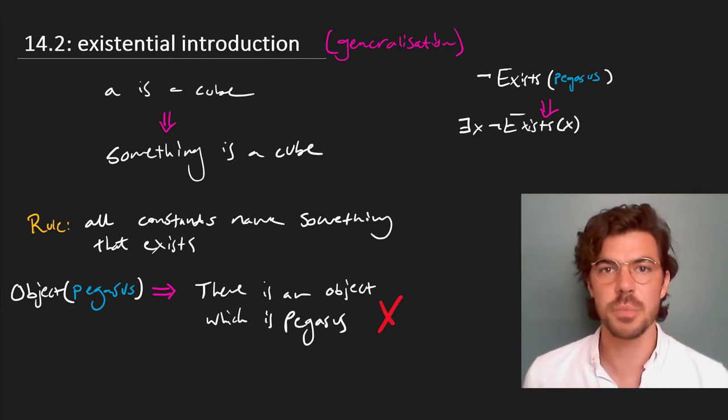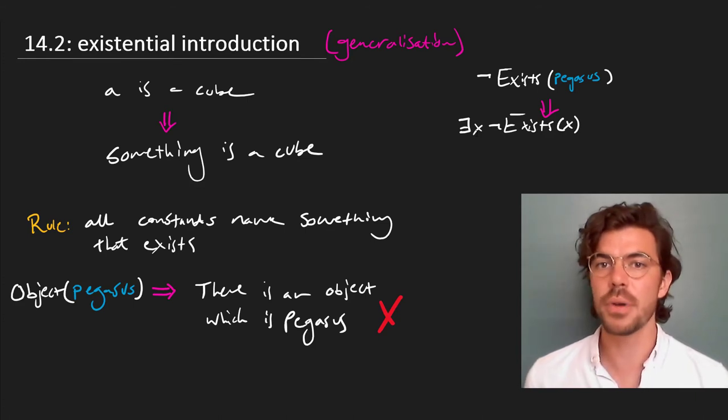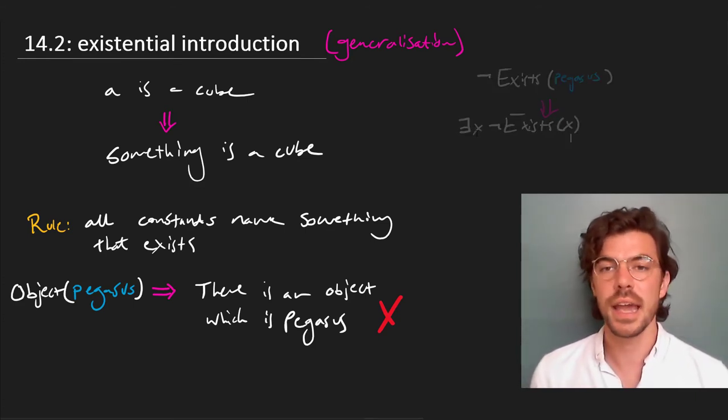but then by generalization, this gives us the awkward sentence that there exists something which does not exist. But this business of existence as a predicate or as an operator is, to say the least, fraught.